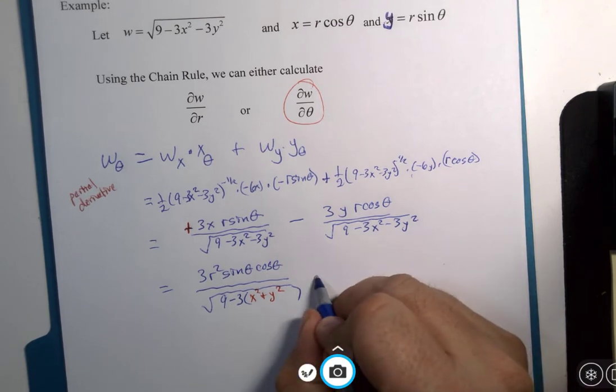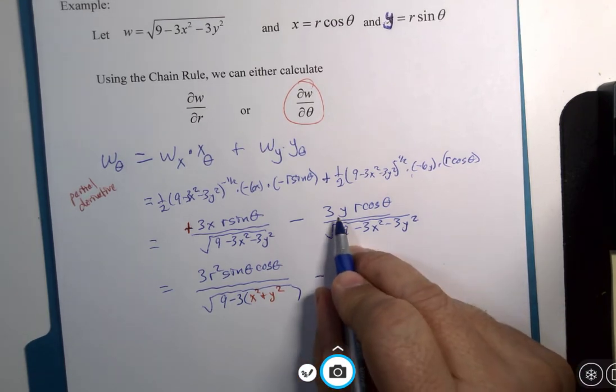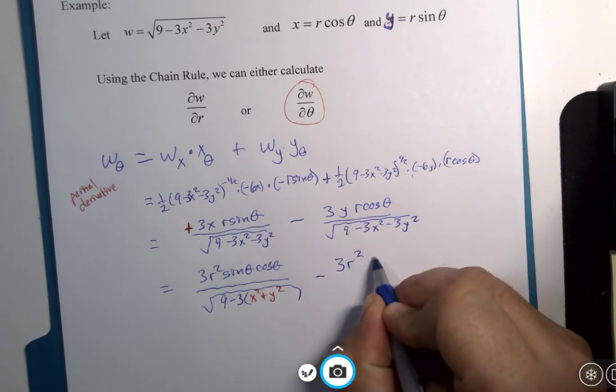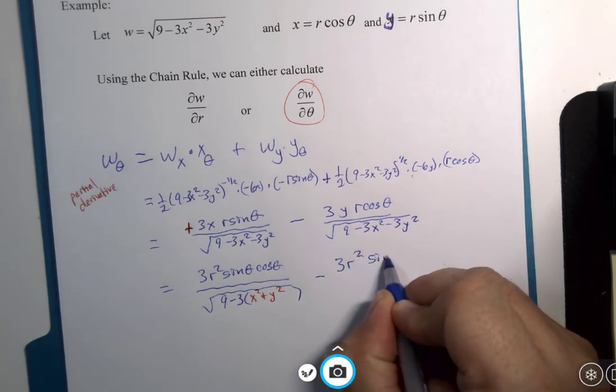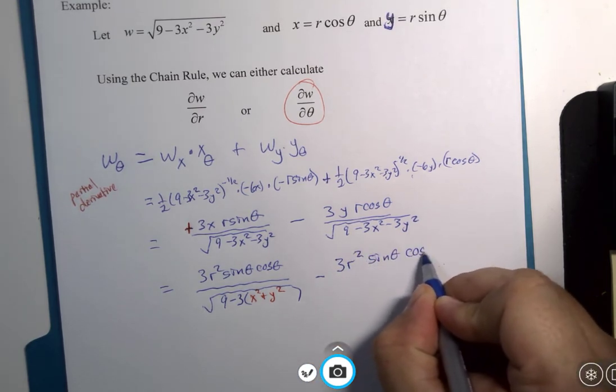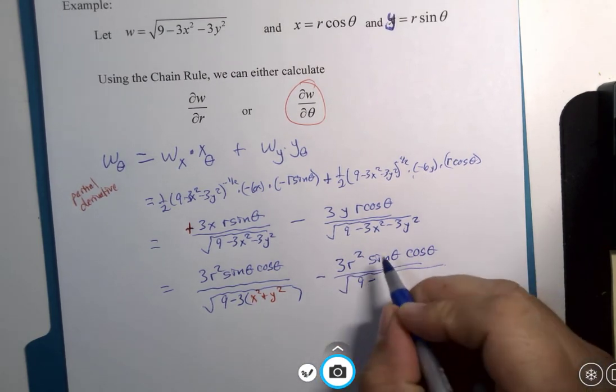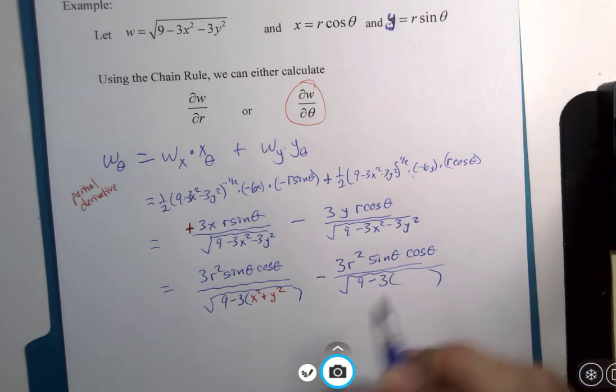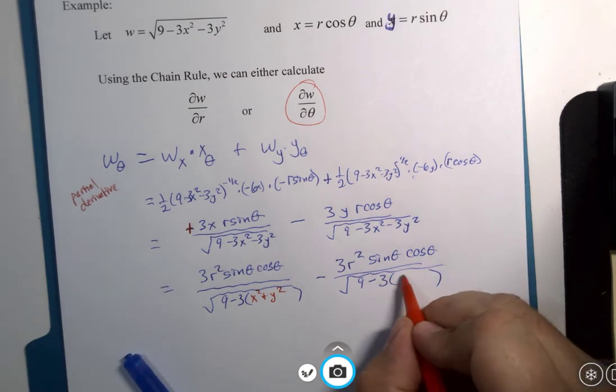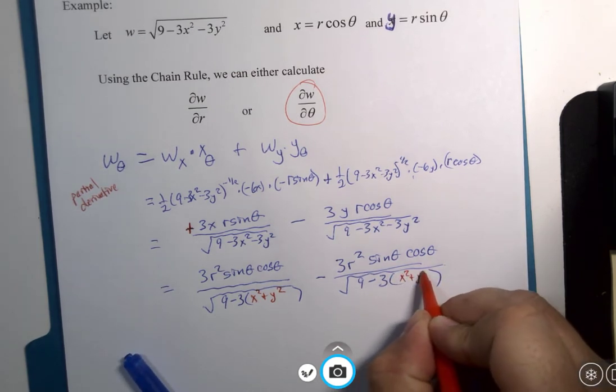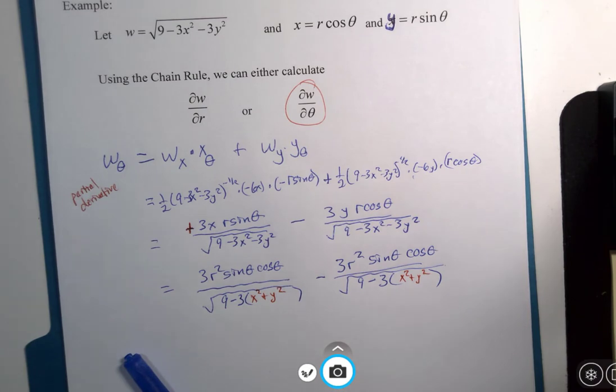Okay, so let's go back to here. Y is r sine theta, so I get three r squared sine theta cosine theta over square root of nine minus three x squared plus y squared.